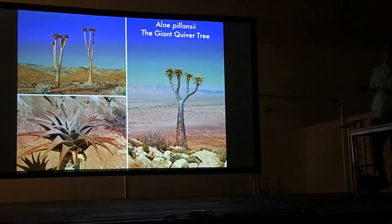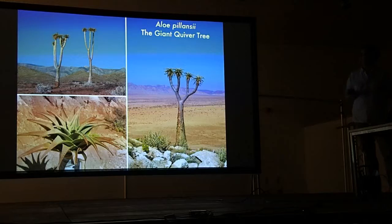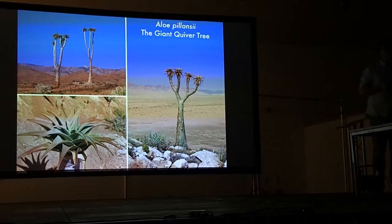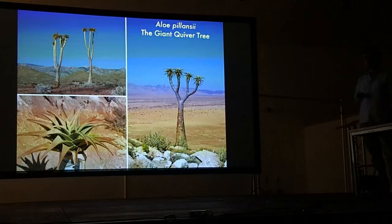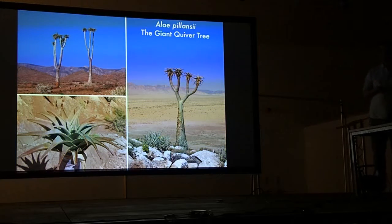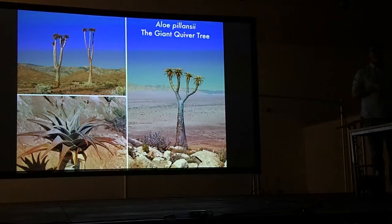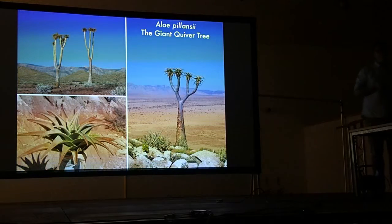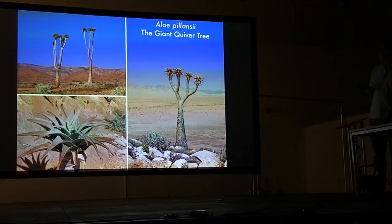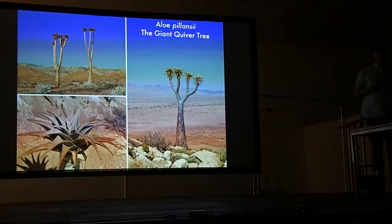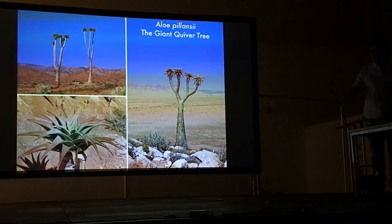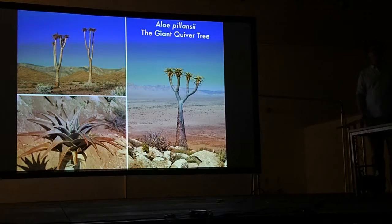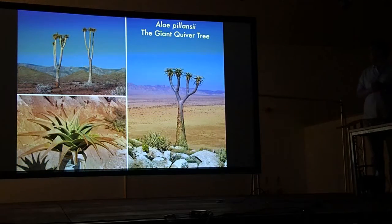This is the giant quiver tree, Aloe pillansii, quite closely related to the tree aloe I showed earlier. It's a very rare plant — critically endangered, with only about 200 left in the wild. It differs from Aloe dichotoma in that its inflorescence forms on the lower leaves of the rosette and droops downwards, whereas on dichotoma they point more upwards.